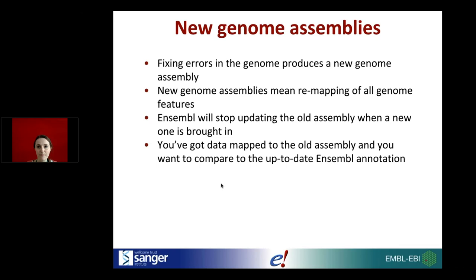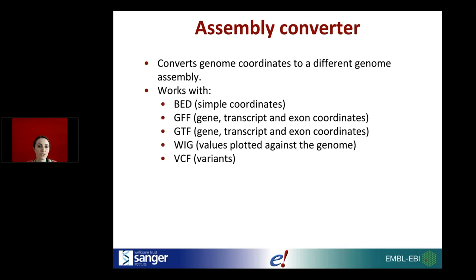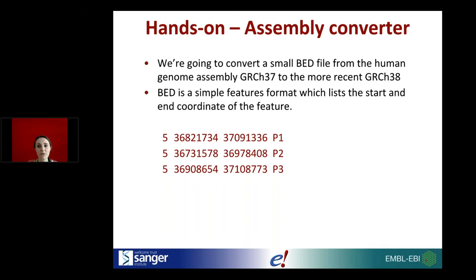If you want to use up-to-date annotation but compare it to data you've mapped to the old assembly, this is when you might want to convert your data. The Assembly Converter converts genome coordinates to a different genome assembly. It works with BED (simple coordinates), GFF and GTF (gene, transcript, and exon coordinates), WIG (values plotted against the genome), and VCF files (variants). I'm going to convert a small BED file from GRCh37 to the more recent GRCh38.